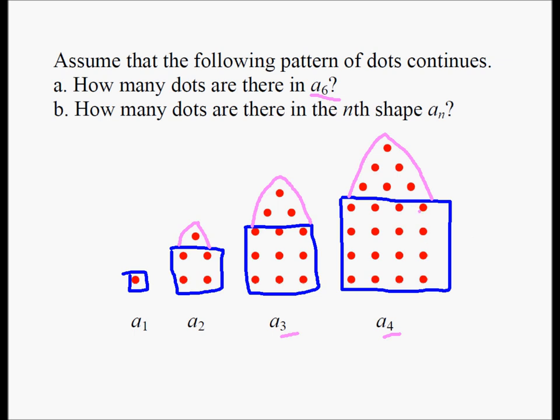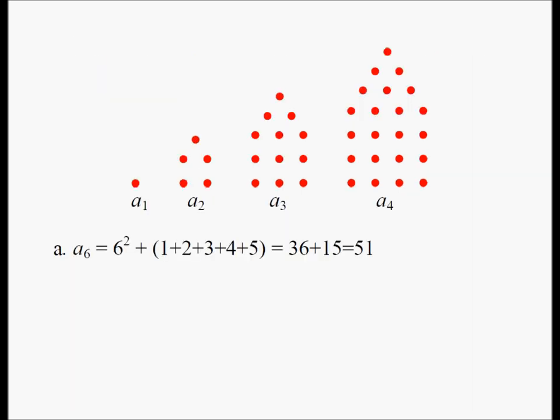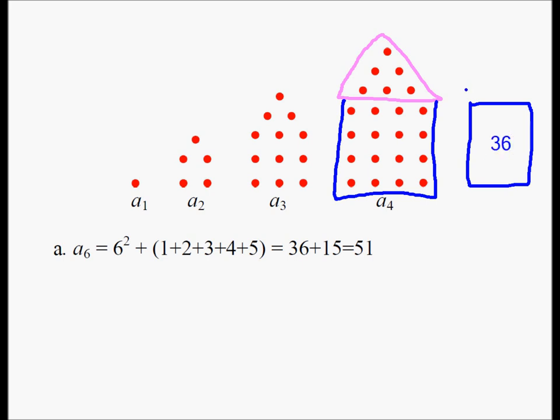We're going to use that concept to answer part A. Arguing just like we did before, we're going to say we have a triangular part and a square part. From the square part, the sixth term will have a six by six square here. We'll have a six by six, thirty-six dots, six times six.